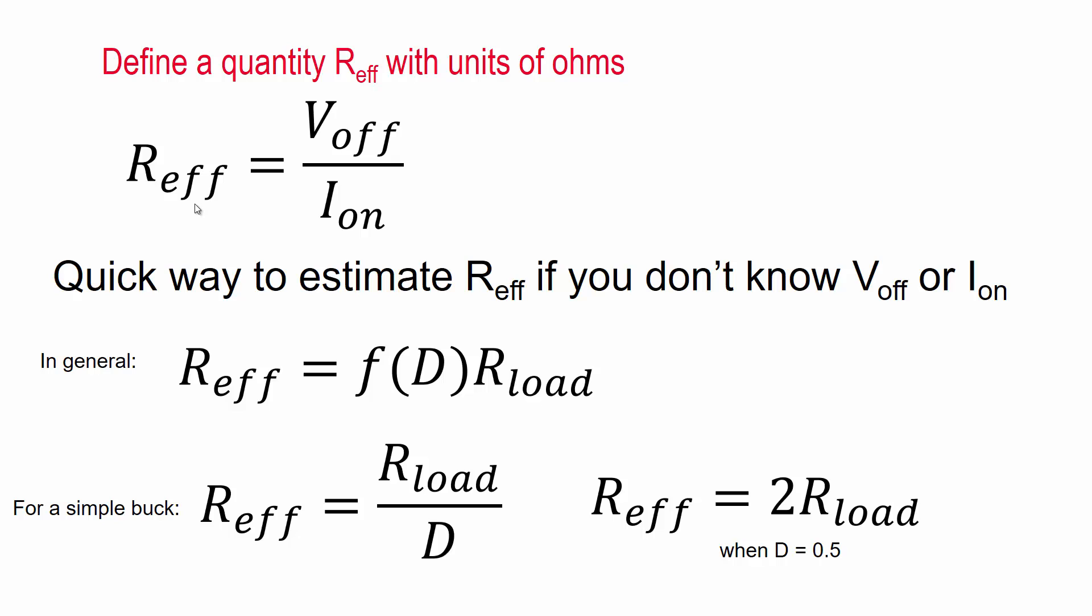So the next step is to define a quantity R_effective with units of ohms. This isn't a real physical resistor, but it has units of resistance. So I gave it a letter R. But it's just the ratio of the voltage across the switch when it's off to the current through the switch when it's on.